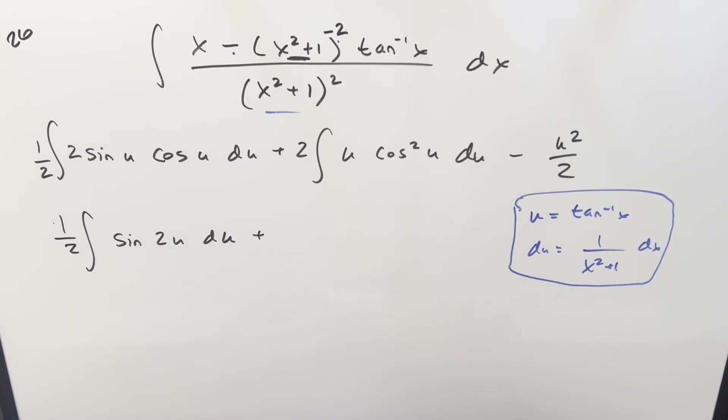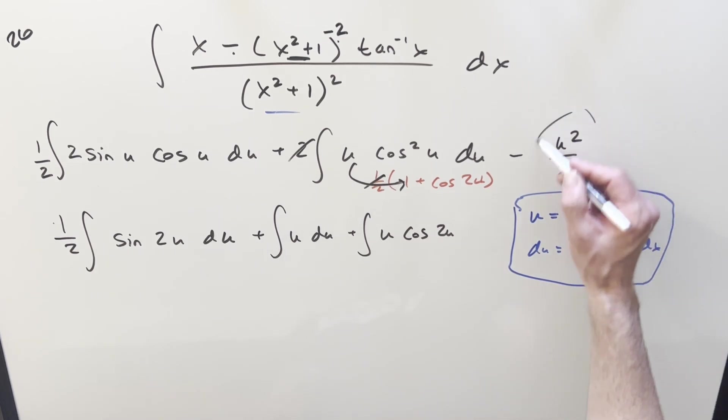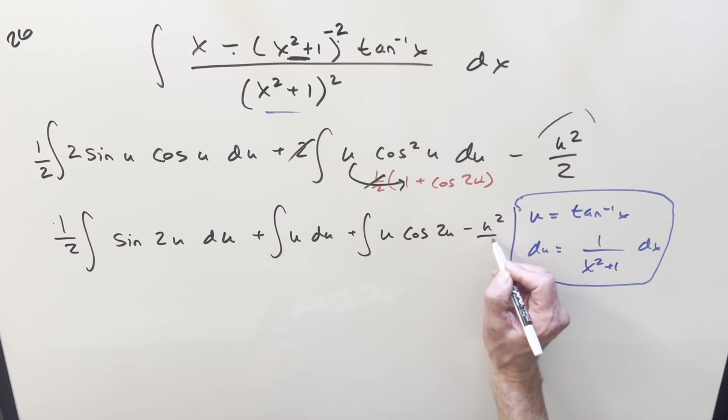Then on this second one, we can use the power reduction here on cos²(u). That's going to be the same thing as 1/2(1 + cos(2u)). So when I rewrite it, the 2 and the 1/2 is going to cancel, and then we can distribute in this u. So I'm going to do it as two separate integrals. We'll have just u times 1 is just u, plus the other one's going to be u·cos(2u) minus this thing here, minus u²/2. But the integral of u is going to be just u²/2, so I can cancel this with this right here.